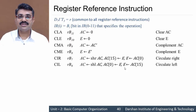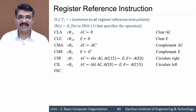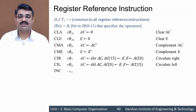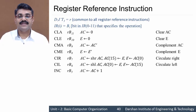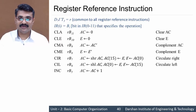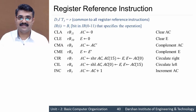The next instruction is INC — a very simple increment instruction. At r·b5, AC equals AC plus 1. So increment AC.